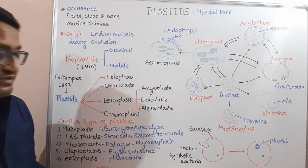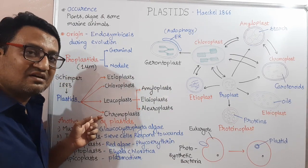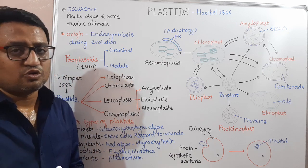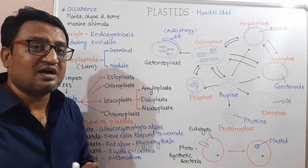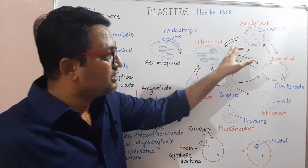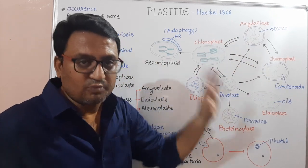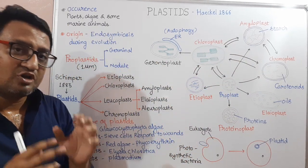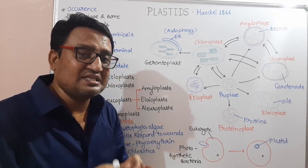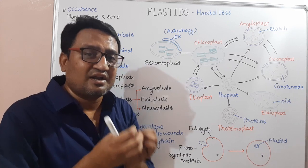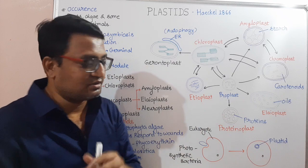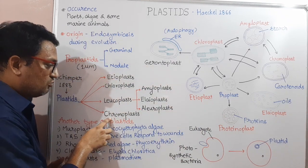The colored Plastid we are going to study is Chromoplasts. 'Chroma' means color. The color of the plant is due to Chromoplasts. Chromoplasts are the advanced state of Chloroplasts — Chloroplasts may differentiate into Chromoplasts. Chromoplasts, along with chlorophylls, also contain carotenes and xanthophylls. As carotenes and xanthophylls give red, orange, and yellow color, plants appear in different colors.